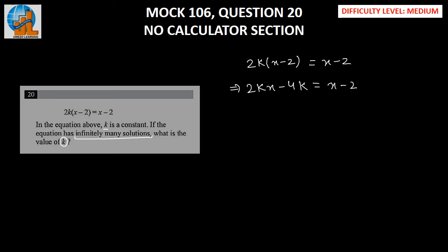Now, we have been given that this equation has infinitely many solutions, which implies our LHS should be equal to RHS. This means 2kx should be equal to x and 4k should be equal to 2.